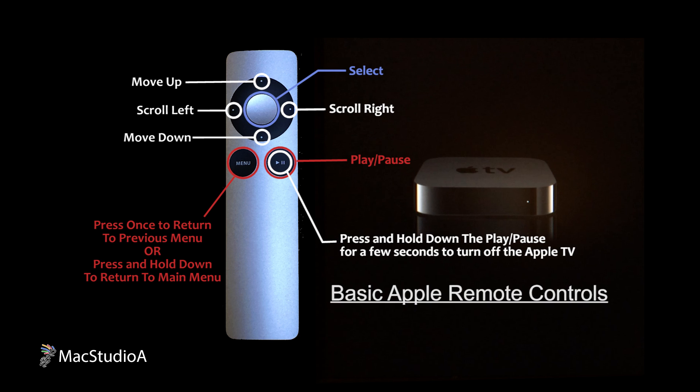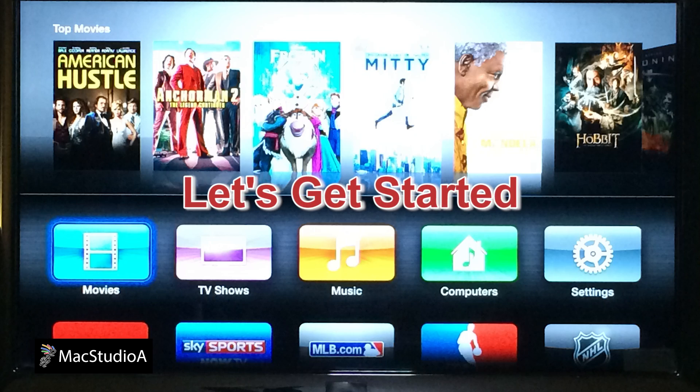One cool tip to turn off the Apple TV: simply press and hold down the play/pause button for a few seconds and you will notice the light of the Apple TV go off. Now that the basic Apple Remote controls are understood, it's time to show how to upgrade the Apple TV software. So let's get started.